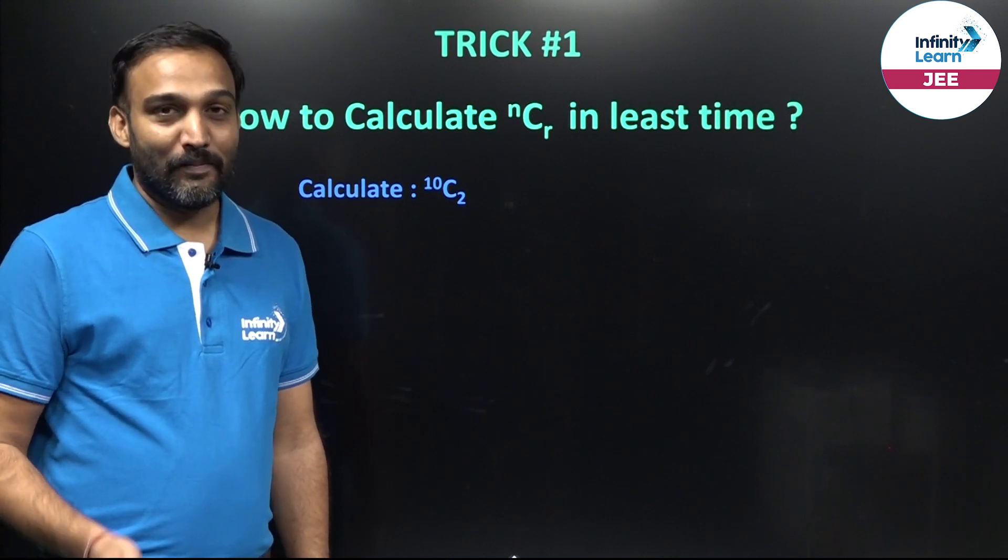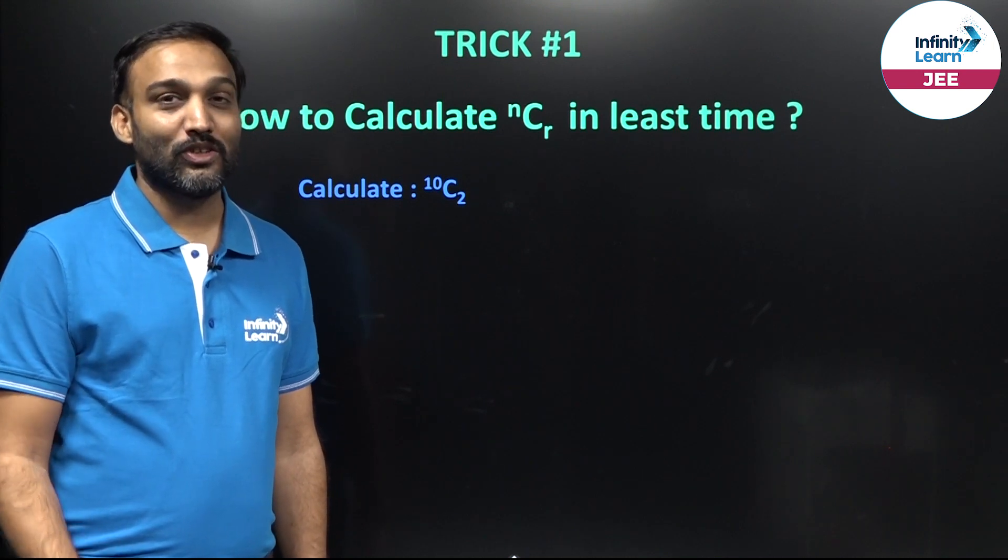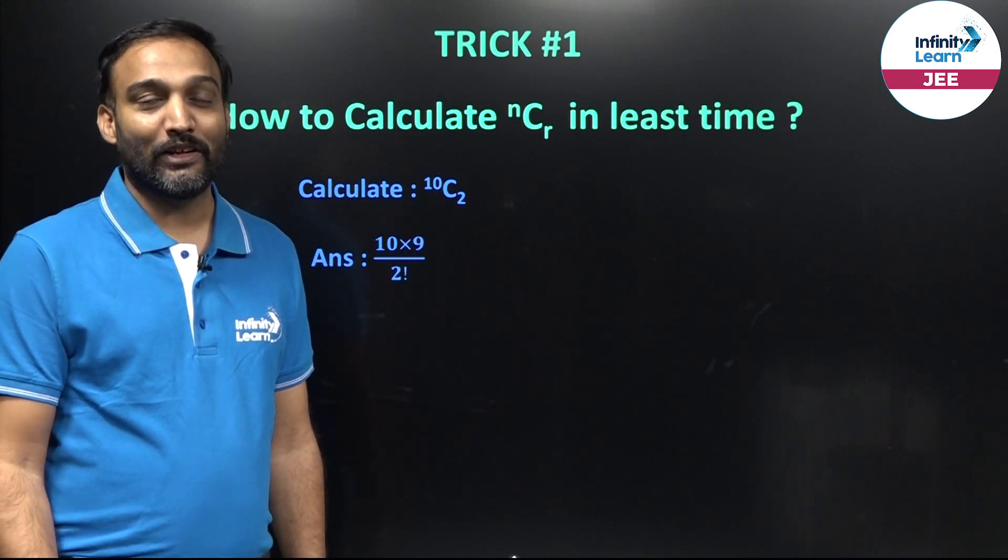So, if tail is 2, the numerator of your answer would be product of two natural numbers starting from 10. So, it would be 10 into 9 upon 2 factorial.